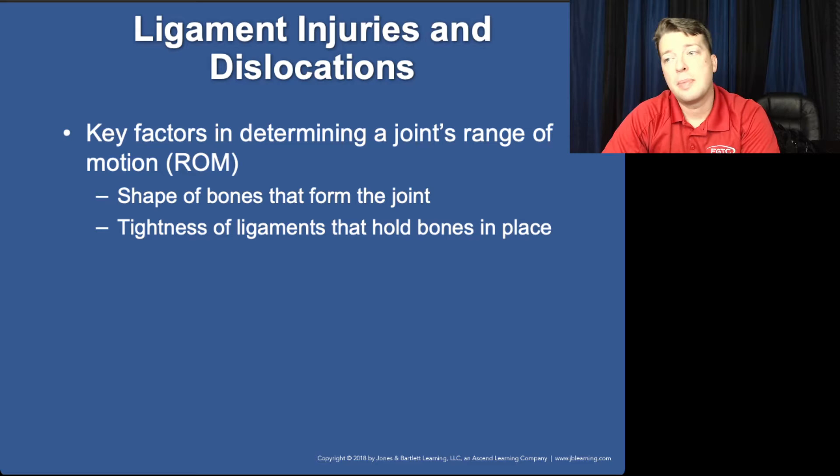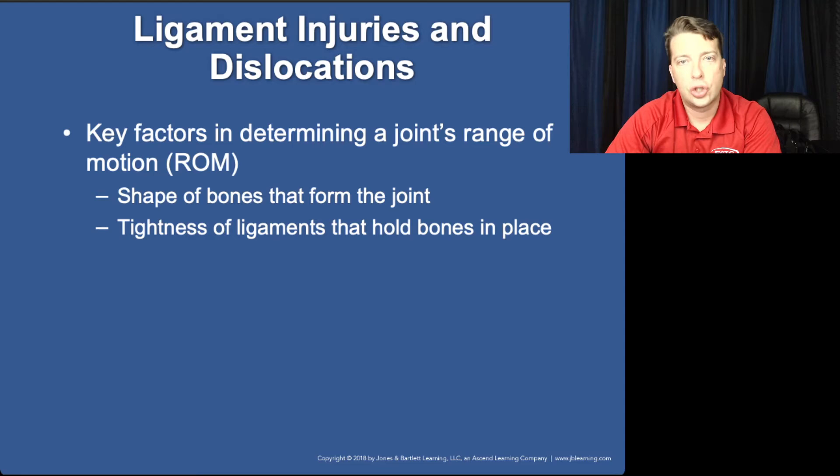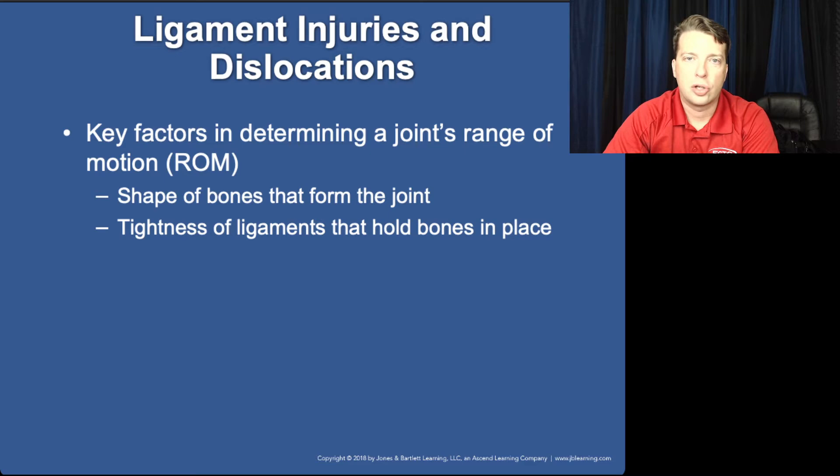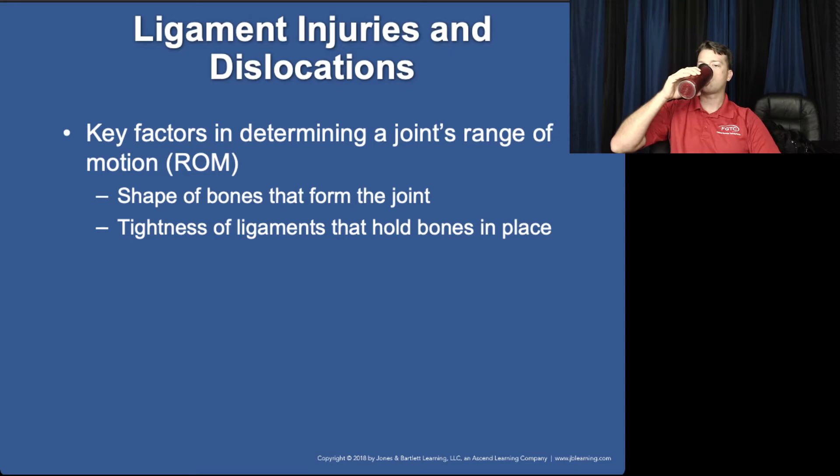Musculoskeletal injuries may also include joint and ligament damage. Our joints are surrounded by ligaments. Tendons connect the muscle to the bone, but ligaments form our joint capsules. So we could tear or stretch a ligament, and that would lead to a dislocation or increase our likelihood of dislocations.